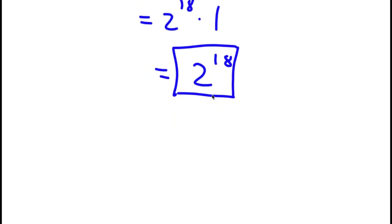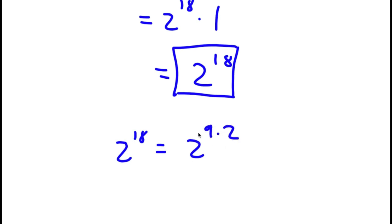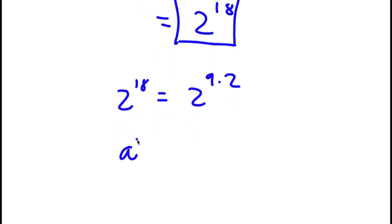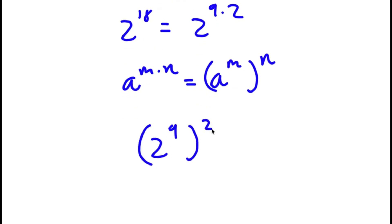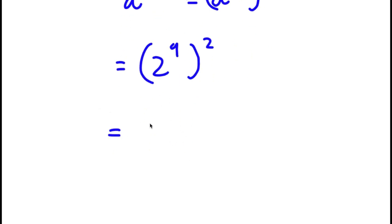Although this is a solution, I'm going to find a way to simplify this further. So 2 to the power of 18 is the same thing as 2 to the power of 9 times 2. And if I have something in the form a to the power of m times n, this is the same thing as a to the power of m to the power of n. So 2 to the power of 9 times 2 equals 2 to the power of 9 to the power of 2.